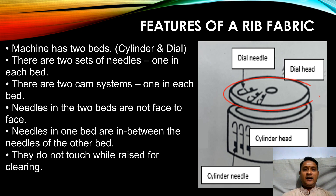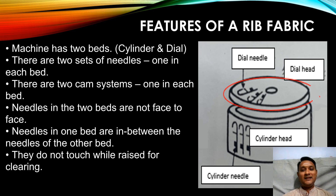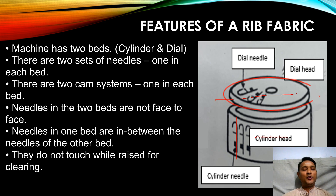The rib machine contains two needle beds. One is called the cylinder bed and the other is called the dial bed. The bed which is vertical is called the cylinder bed, and the bed which is horizontal is called the dial. Since there are two beds, there will be two sets of needles — the needles placed in the cylinder bed are called cylinder needles, and the needles placed in the dial bed are called dial needles.